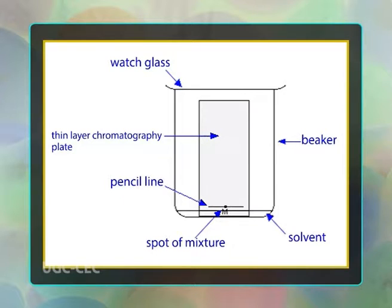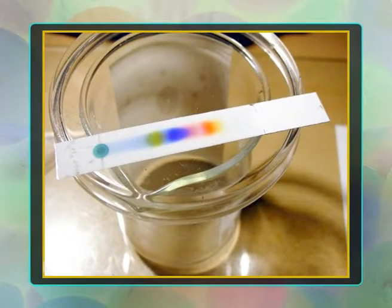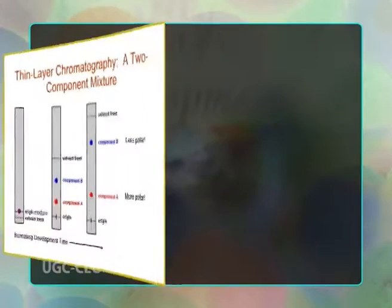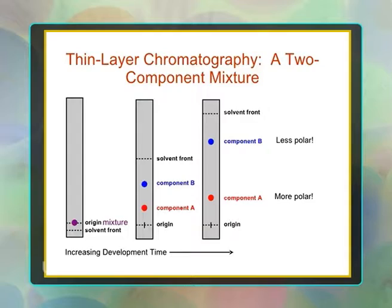Thin layer chromatography (TLC) is a chromatography technique used to separate non-volatile mixtures. TLC is performed on a sheet of glass, plastic, or aluminium foil coated with a thin layer of adsorbent material — usually silica gel, aluminium oxide (alumina), or cellulose — as the stationary phase. After the sample has been applied on the plate, a solvent or solvent mixture known as the mobile phase is drawn up the plate via capillary action. Because different analytes ascend the TLC plate at different rates, separation is achieved.